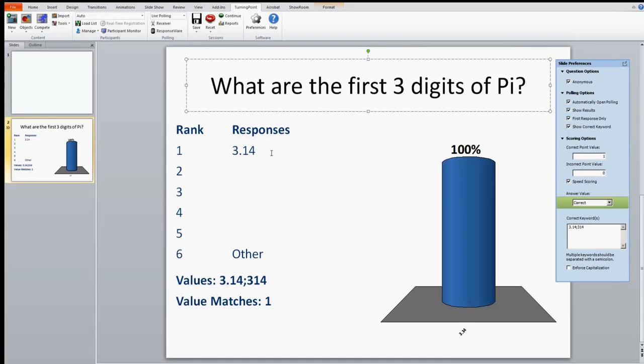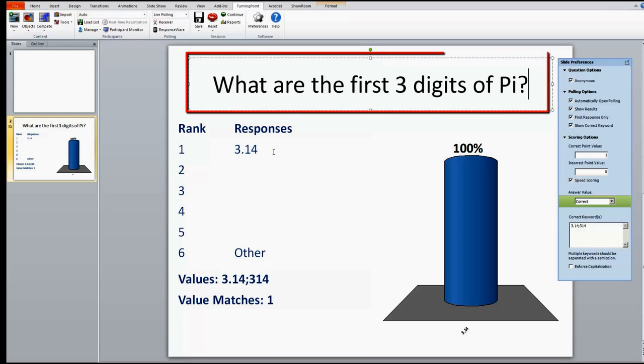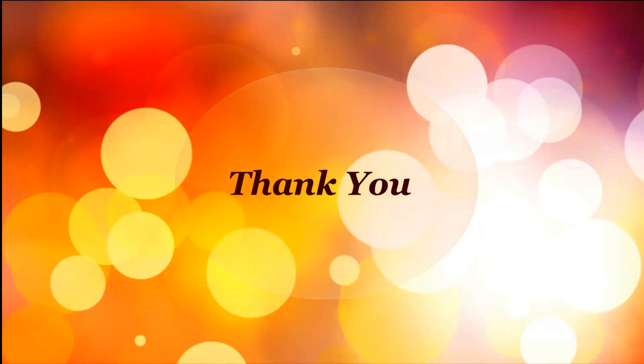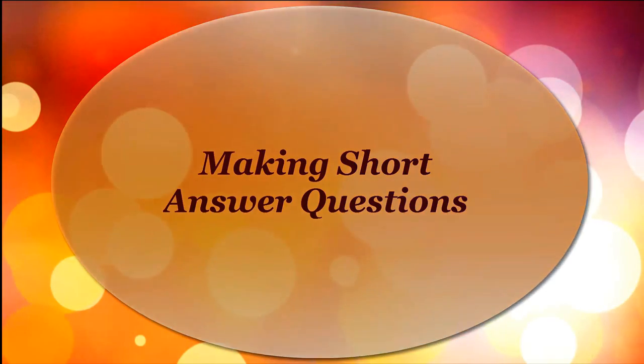Today you learned how to make a short answer slide using Turning Point software inside of PowerPoint. After selecting Short Answer from the pull-down list in the new icon, you entered the question, selected options from the slide preference box, and entered the keyword answers. Thank you for taking the time to view this video. This concludes the tutorial on making short answer questions using Turning Point software inside of PowerPoint.